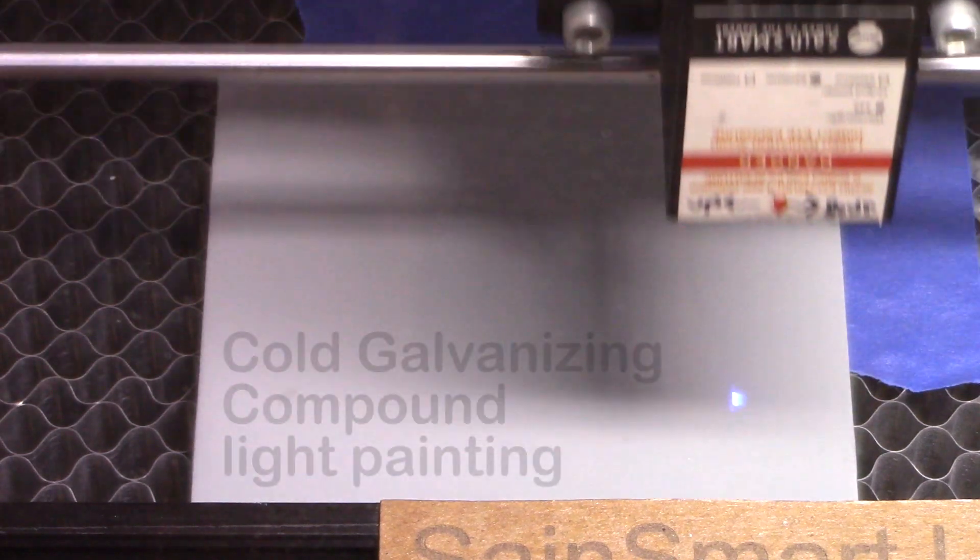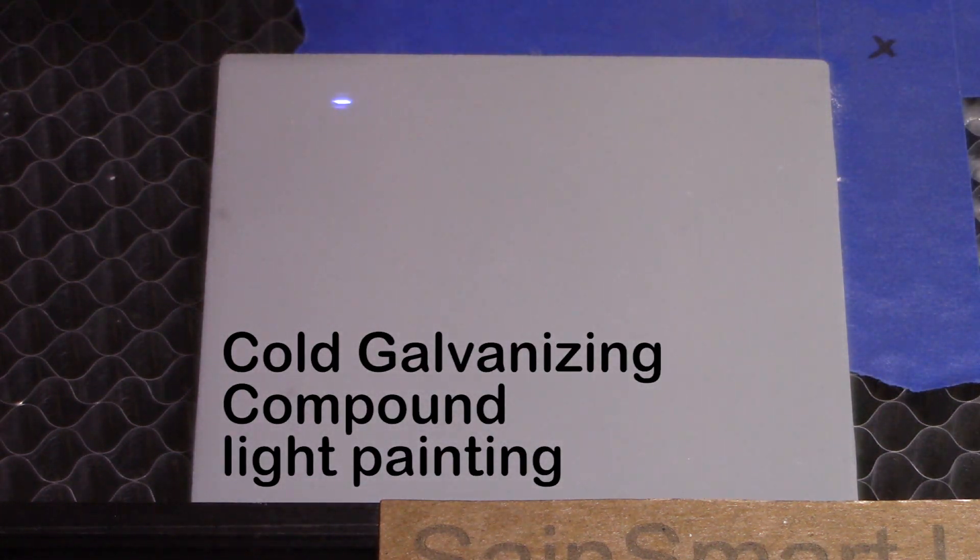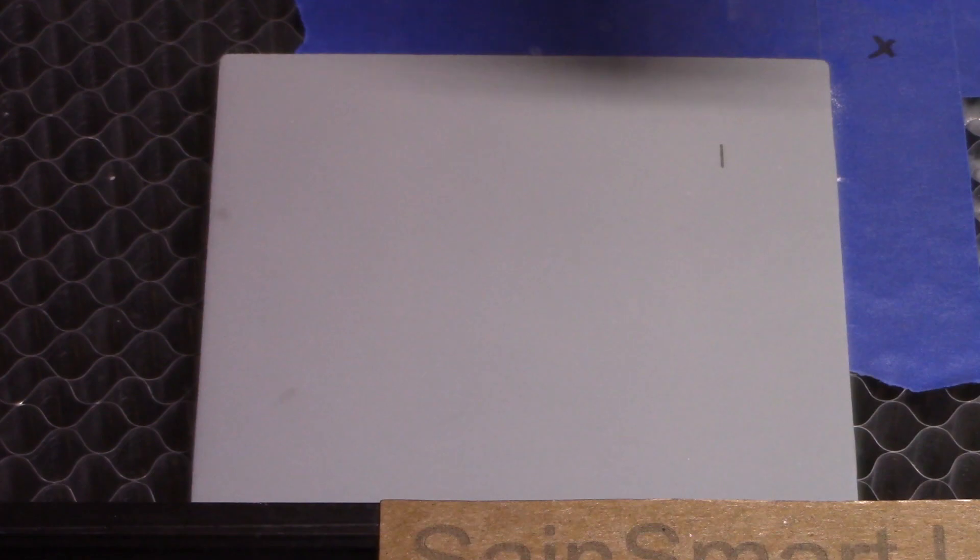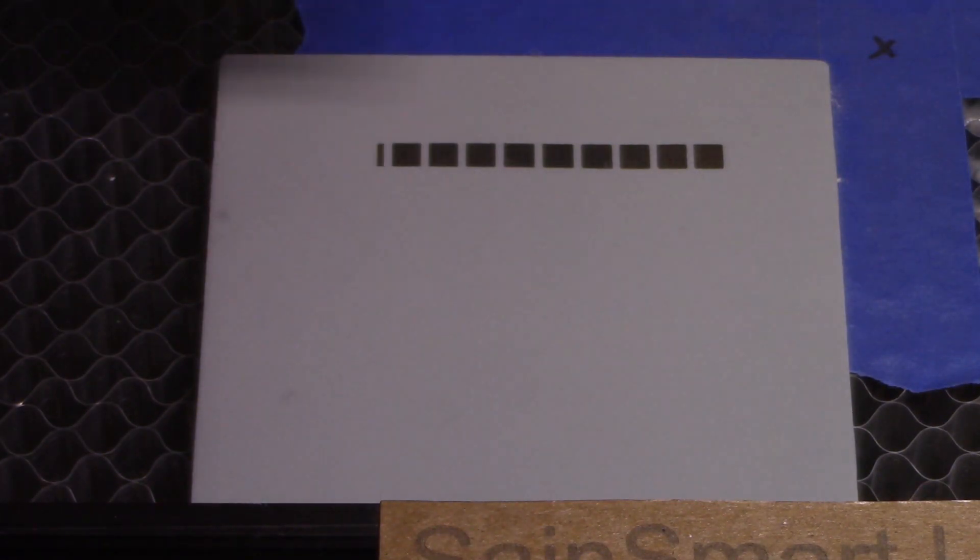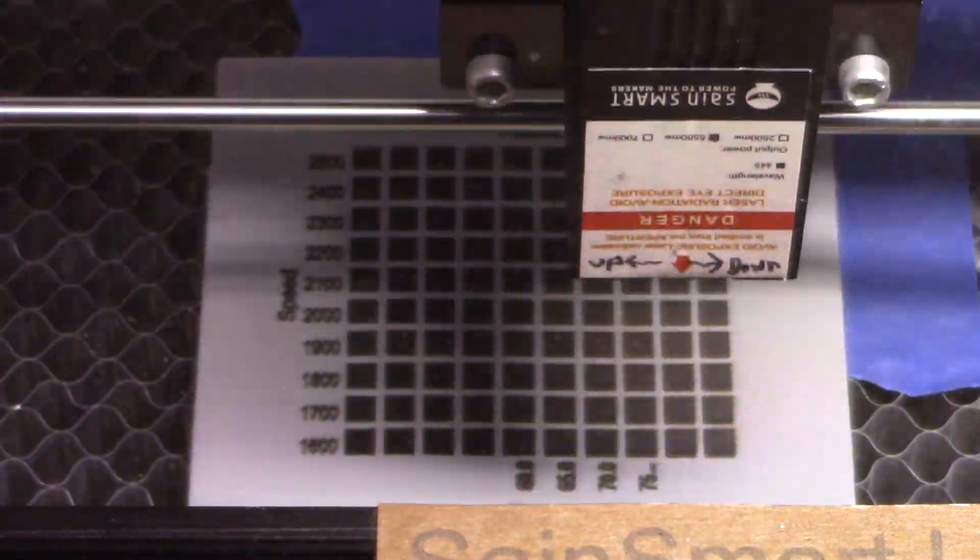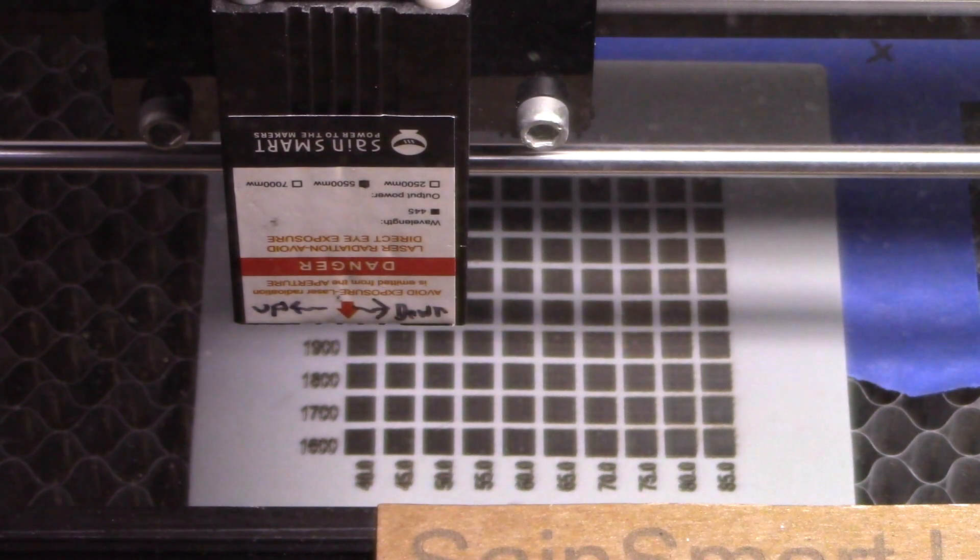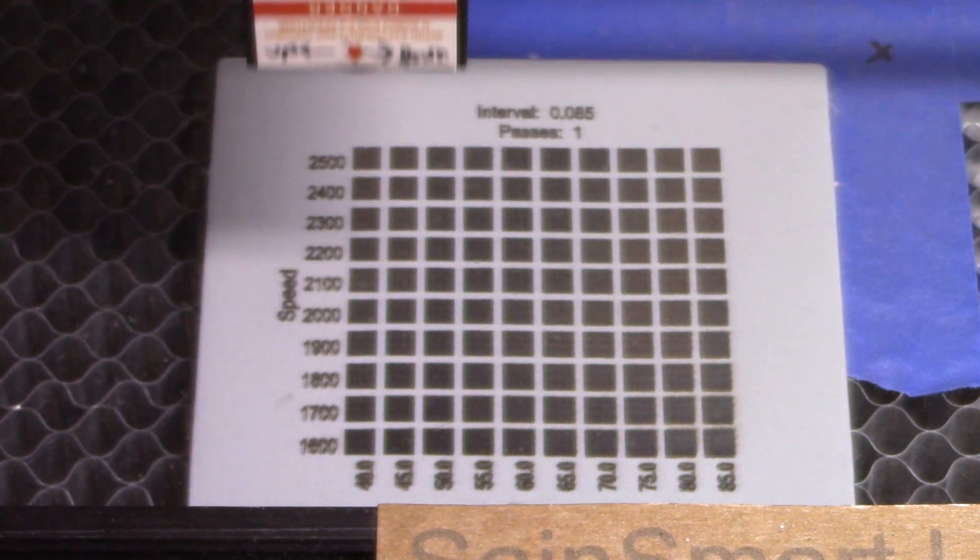Now we have the cold galvanizing compound lightly painted tile in the laser and we're going to do a test pattern on this one. Because I know the cold galvanizing compound works a little better, the parameters are a little higher on the speed and a good range in power.